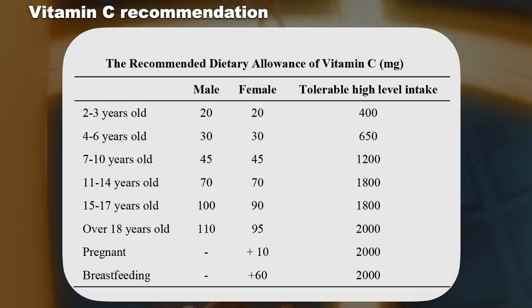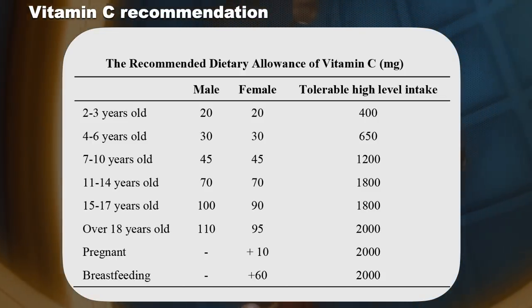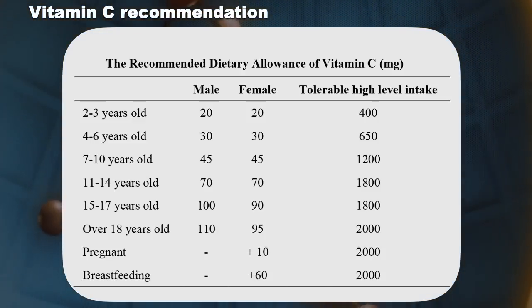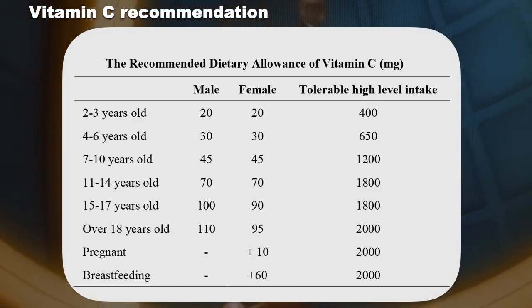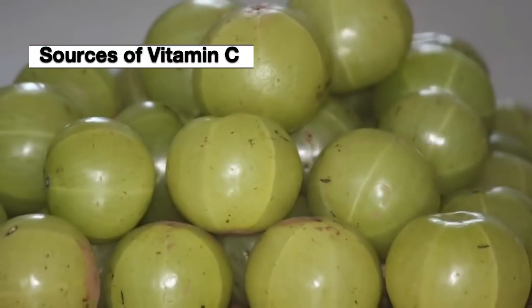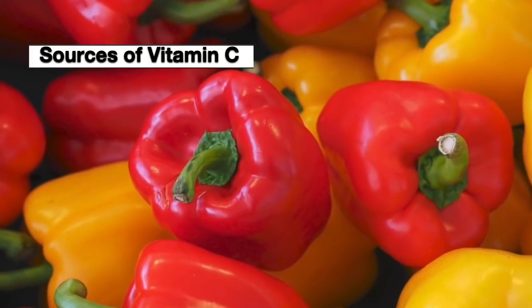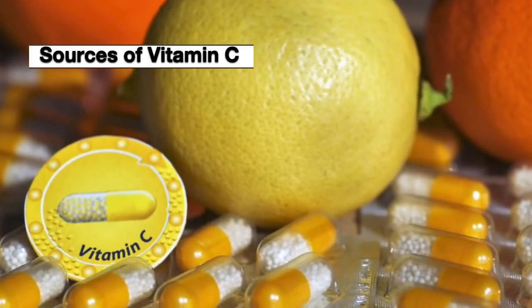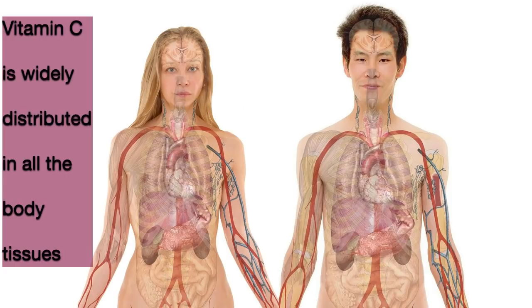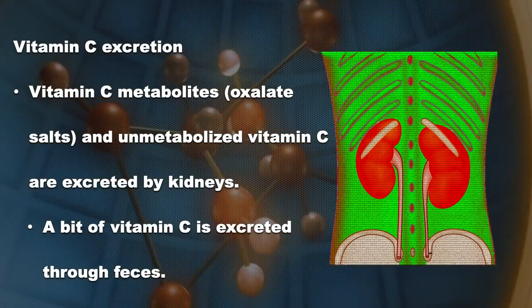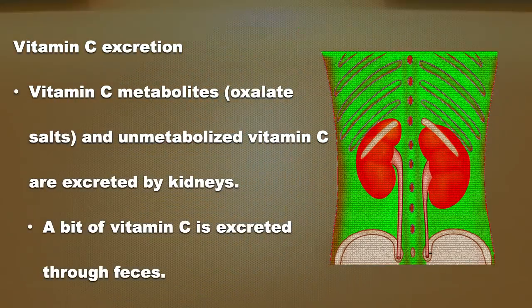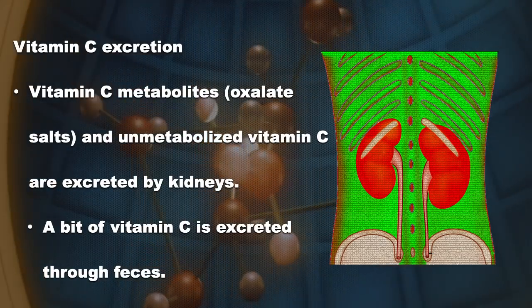Under different circumstances — for example, if you are stressed and oxidative stress goes up, or if you are infected or have a chronic disease — the requirement for vitamin C will go up. Vitamin C is abundant in mandarins, grapefruit, strawberries, guavas, gooseberry, amla or Indian gooseberry, and vegetables like bell peppers and Brussels sprouts. It can also be sourced from supplements. Vitamin C is widely distributed in all body tissues and found in lower concentrations in body fluid. Vitamin C metabolites such as oxalate salts, as well as unmetabolized vitamin C, are excreted via the kidneys, with a small amount excreted through feces.